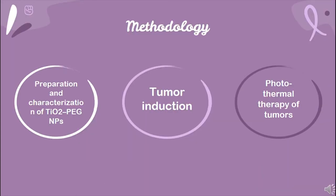Regarding methodology, I will start with the synthesis and characterization of titanium dioxide-polyethylene glycol nanoparticles. Firstly, we will use titanium dioxide with a particle size of 10 to 25 nanometers and a purity higher than 99% in the anatase phase. They were then coated with a layer of polyethylene glycol. After that, a microscopic image of the titanium dioxide-polyethylene glycol nanoparticles was taken by transmission electron microscope.